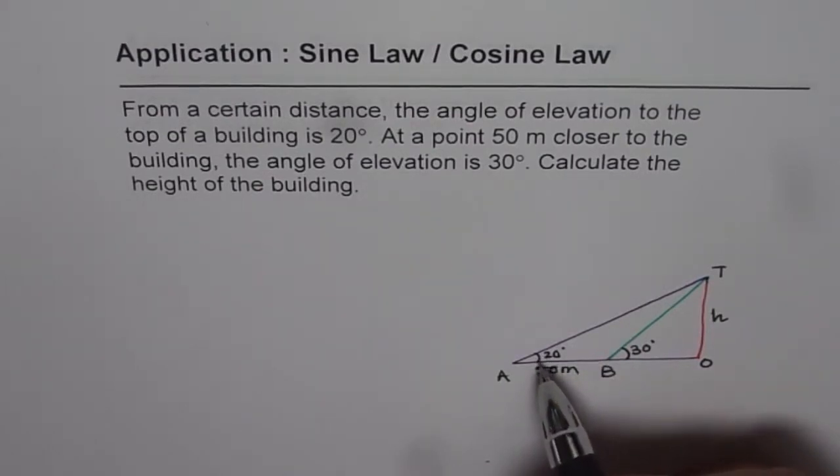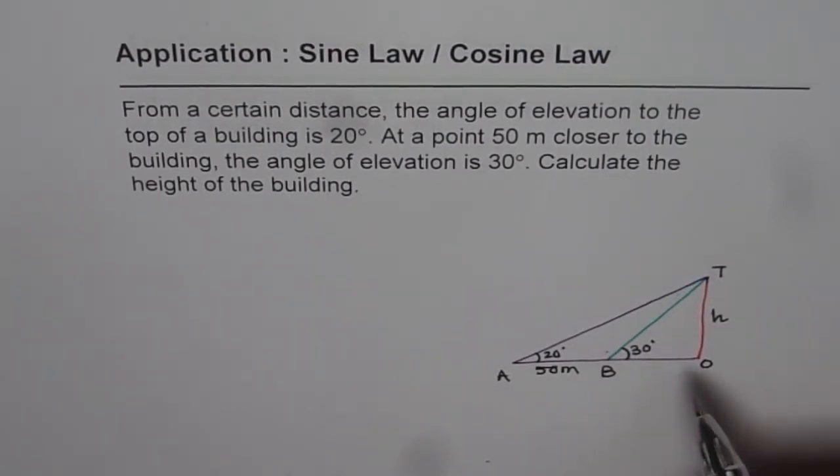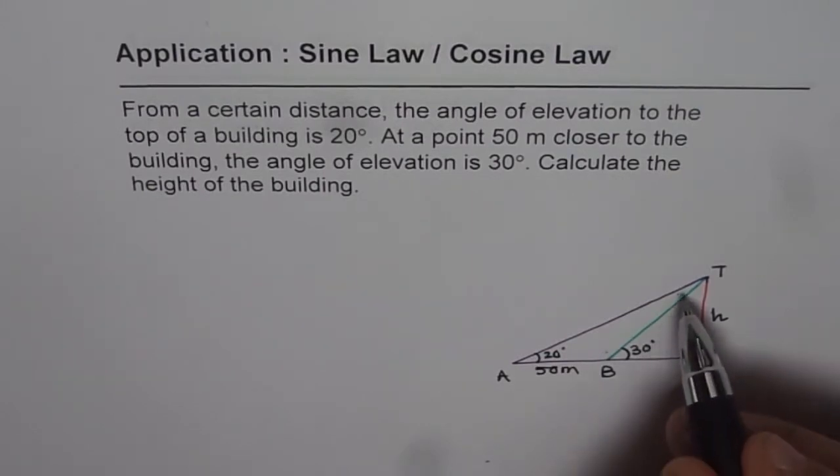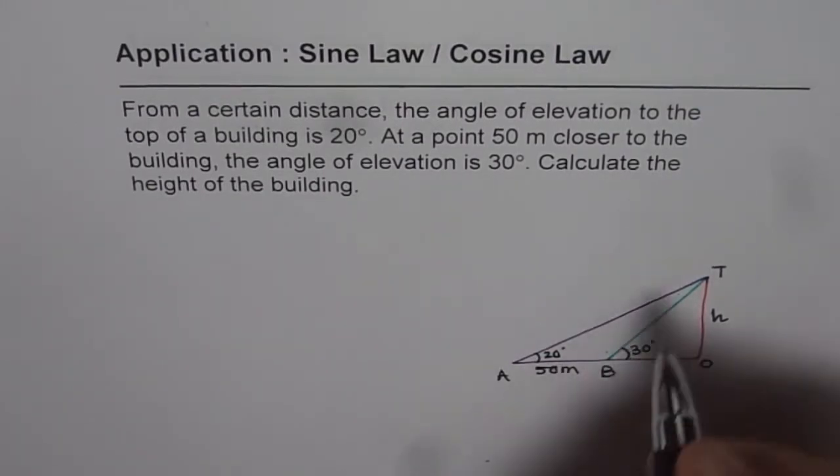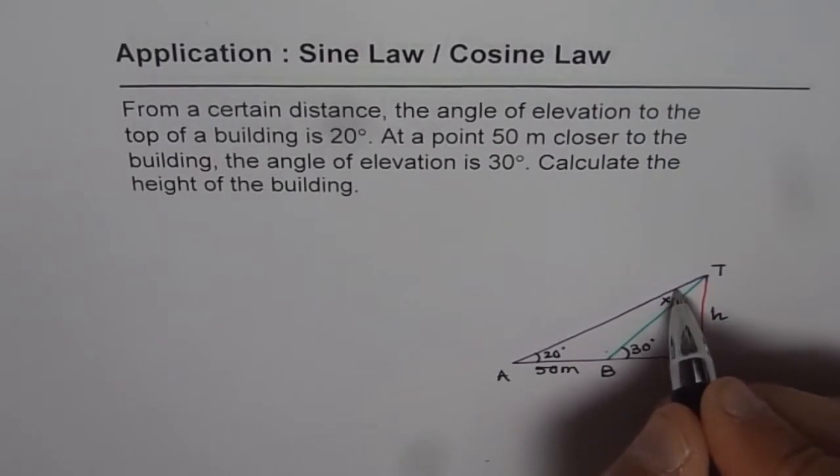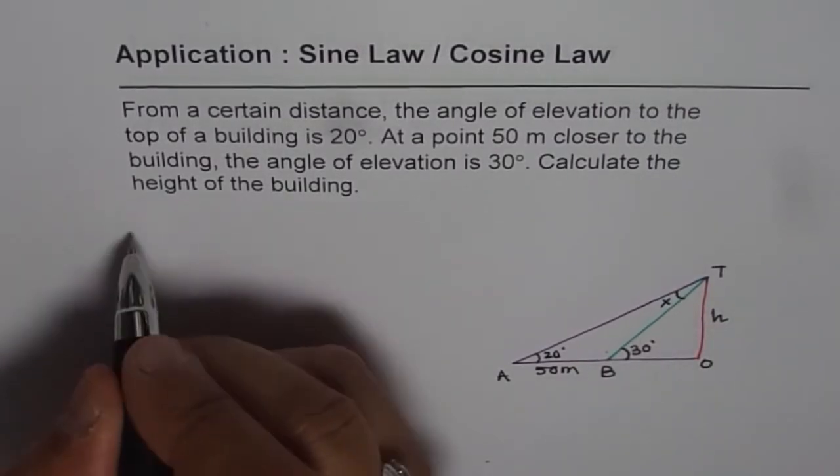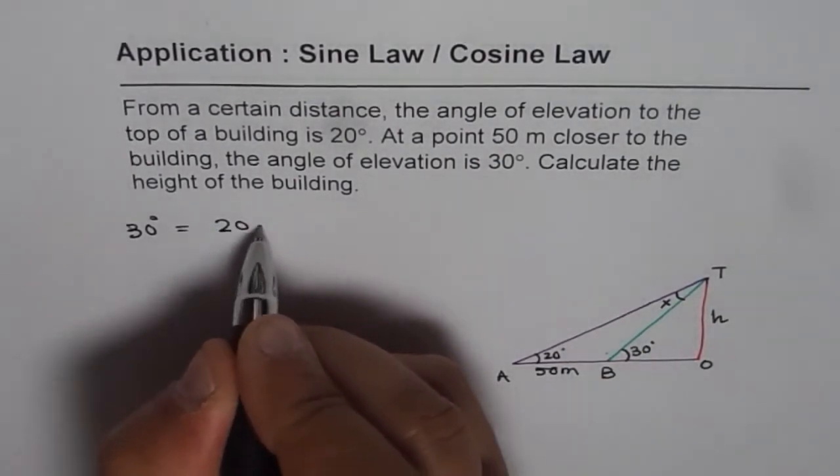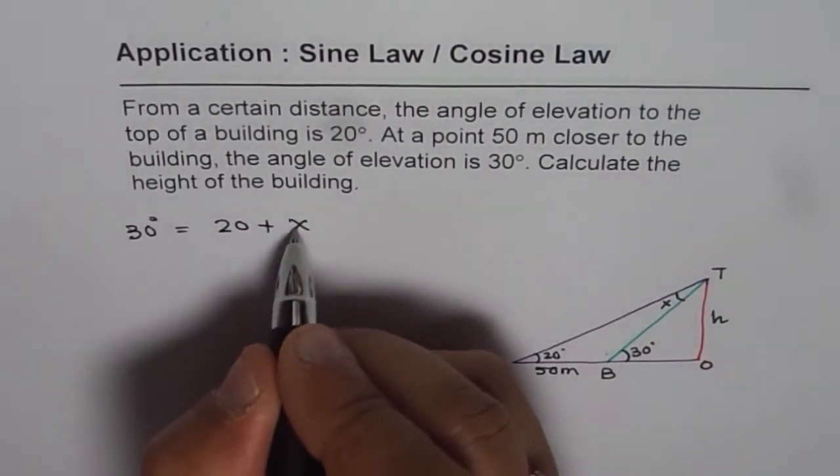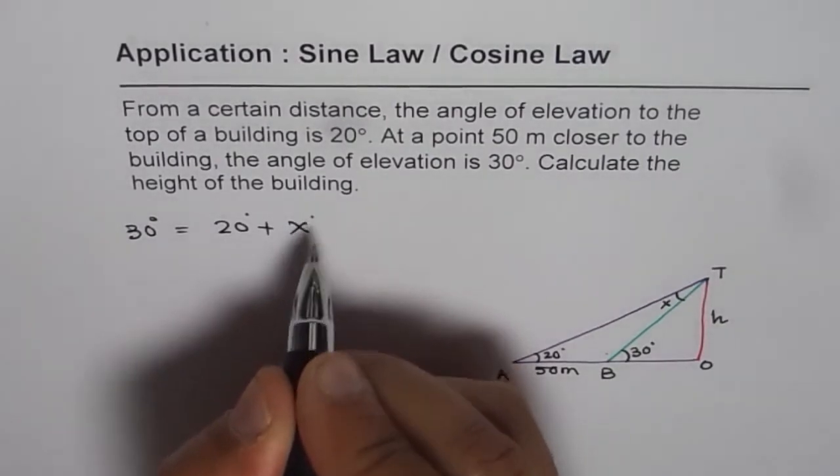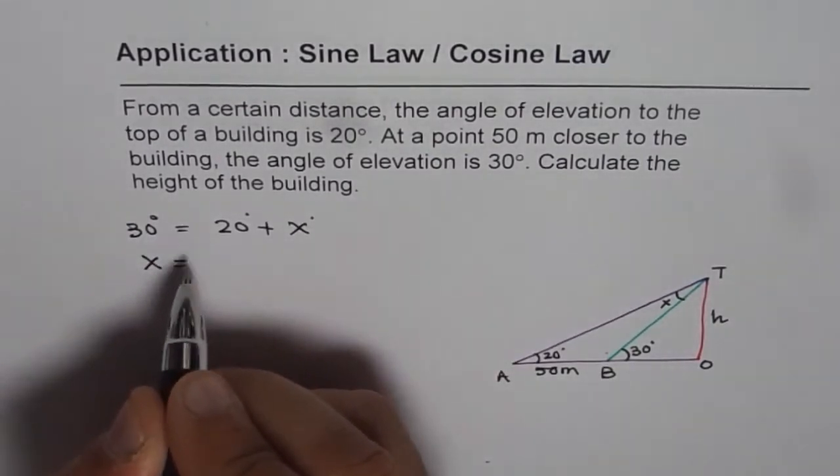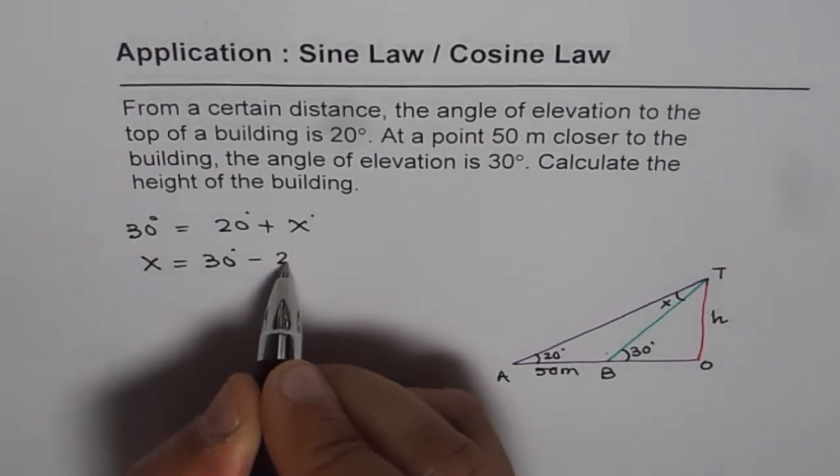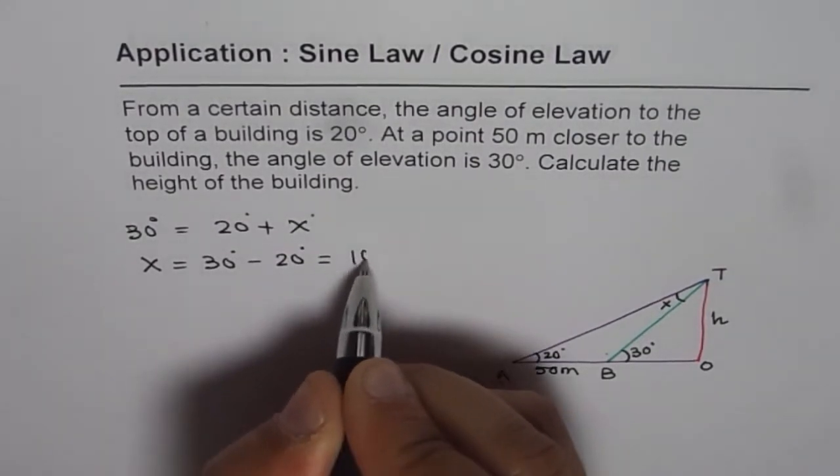Now the triangle ABT, we can find all the angles of this triangle. So I can use exterior angle theorem, which is 30 equals 20 plus, let us say this is x, right? So we know 30 degrees, the exterior angle is equal to sum of remote interior angles, so it is 20 plus x.